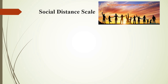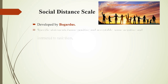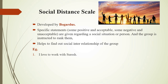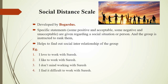Third method: Social Distance Scale. This scale was developed by Bogardus. Specific statements are given regarding a social situation or person, and the group is instructed to rank them. It helps to find out the social interrelationship of the group. Example statements: 'I love to work with Suresh,' 'I like to work with Suresh,' 'I don't mind working with Suresh,' 'I find it difficult to work with Suresh,' 'It is impossible to work with Suresh.' These are the specific statements given regarding a social situation or person.